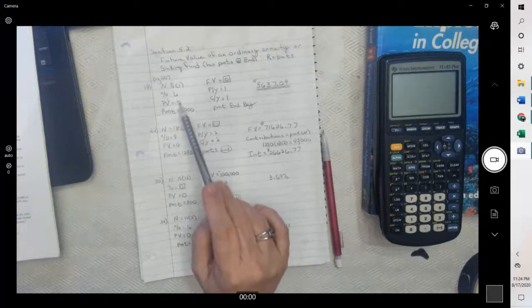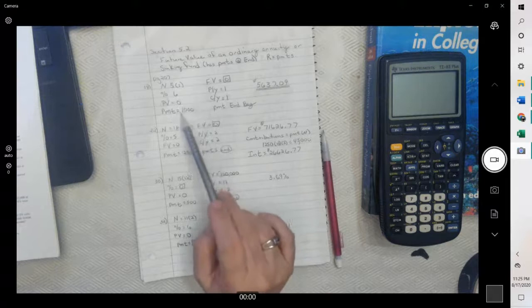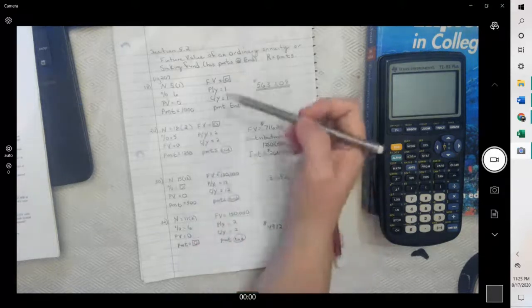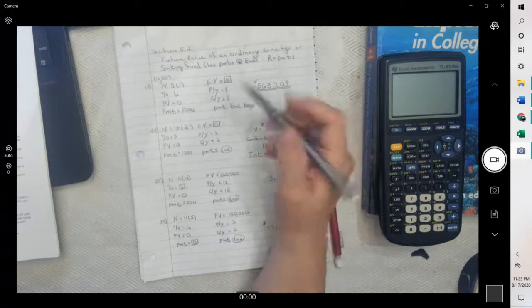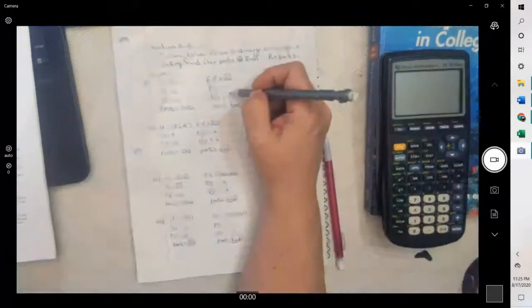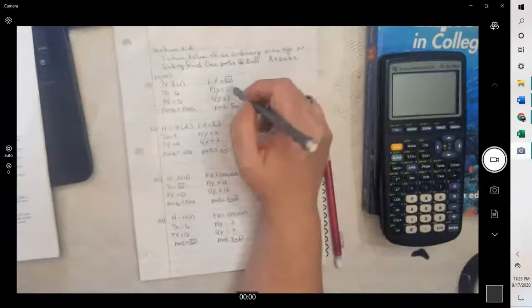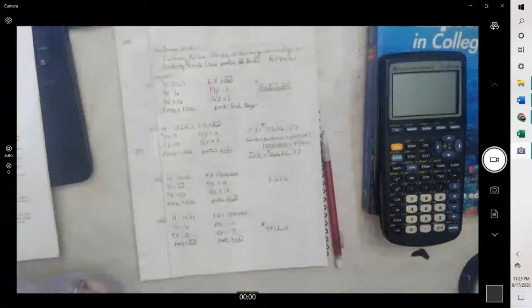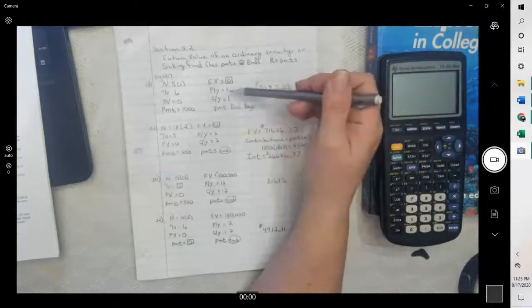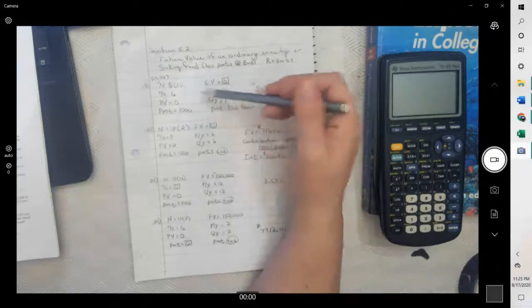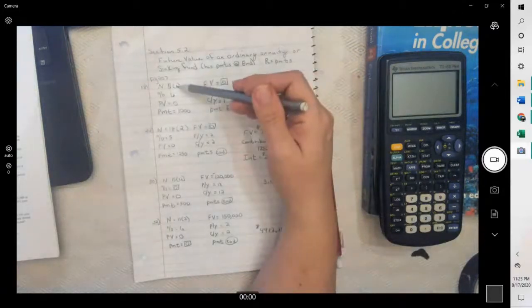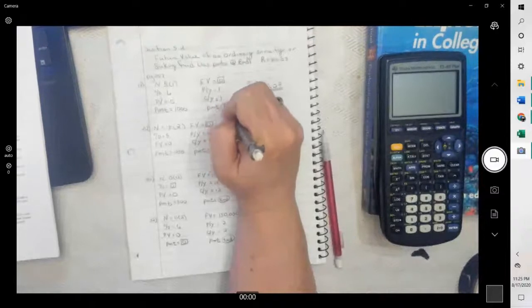We are not having a down payment or any amount at the beginning, but we're making payments of $1,000. They're yearly, so payments per year are once a year. Payments and compounding, when you're doing payments, these will match. Only when you're doing payments. One lump sum, they don't match as we saw in 5.1. But when you're making payments, these will match. And then this is number of years, payments per year, which is one, and it will be at the end.